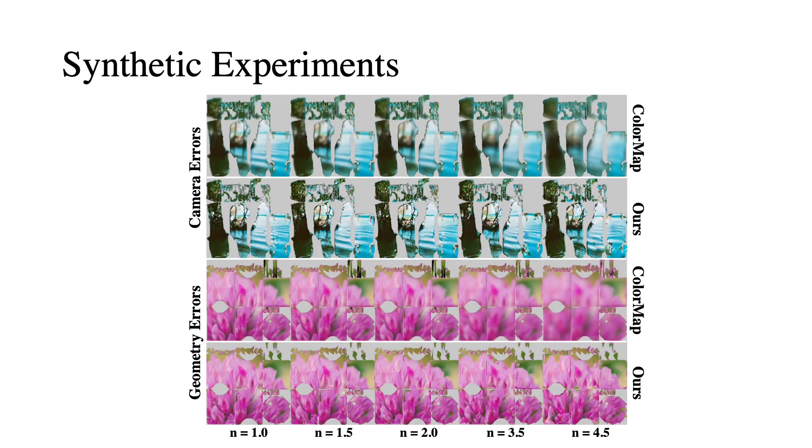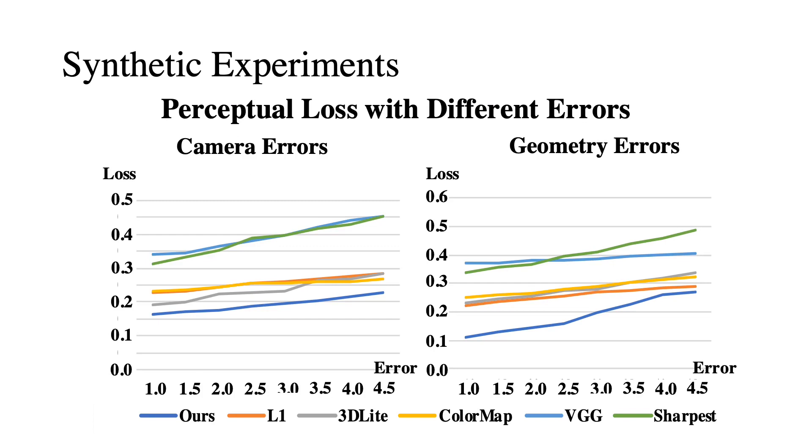Experiments on synthetic data show that we are better than explicit parametric models at handling large misalignments, where our texture remains sharp with increasing amounts of camera or geometry errors. Quantitatively, our method achieves the best performance with respect to the perceptual loss under different levels of camera and geometry errors.